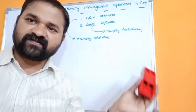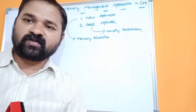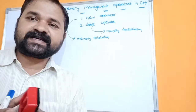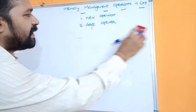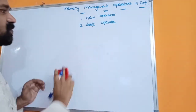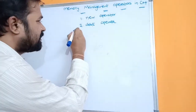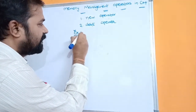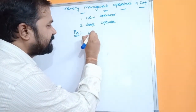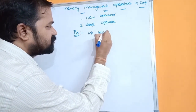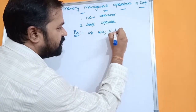Now, first let us see the syntax of the new operator, followed by the syntax of the delete operator. Then we will discuss an example program to demonstrate new and delete operators. Let us directly go to an example of new operator. Here, int *a — this is the declaration of a variable, and a is the name of the variable.